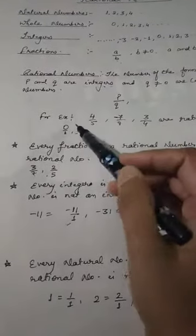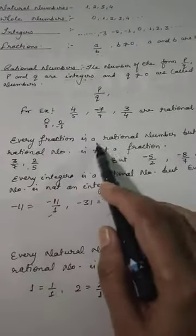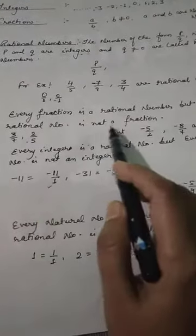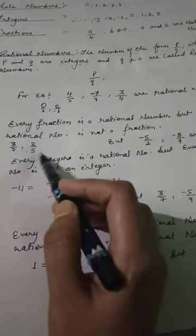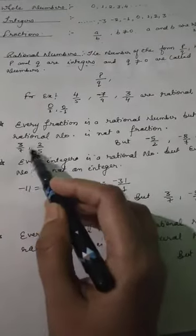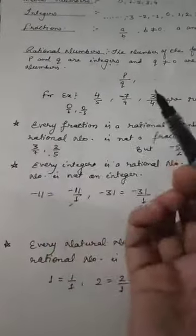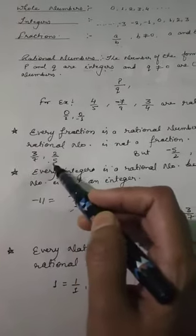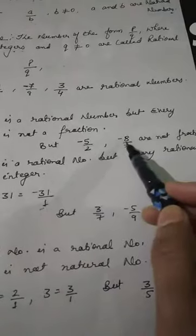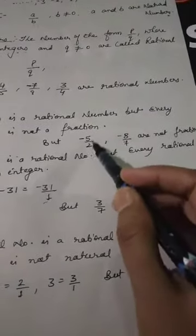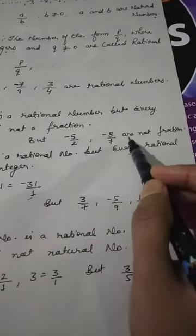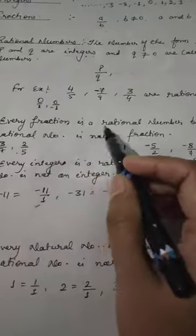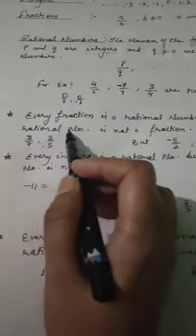We conclude that every fraction is a rational number, but every rational number is not a fraction. For example, 3/7 and 2/5 are fractions and also rational numbers. But −5/2 or −8/7 — these negative numbers expressed in this form are never fractions. So every fraction is a rational number, but every rational number is not necessarily a fraction.